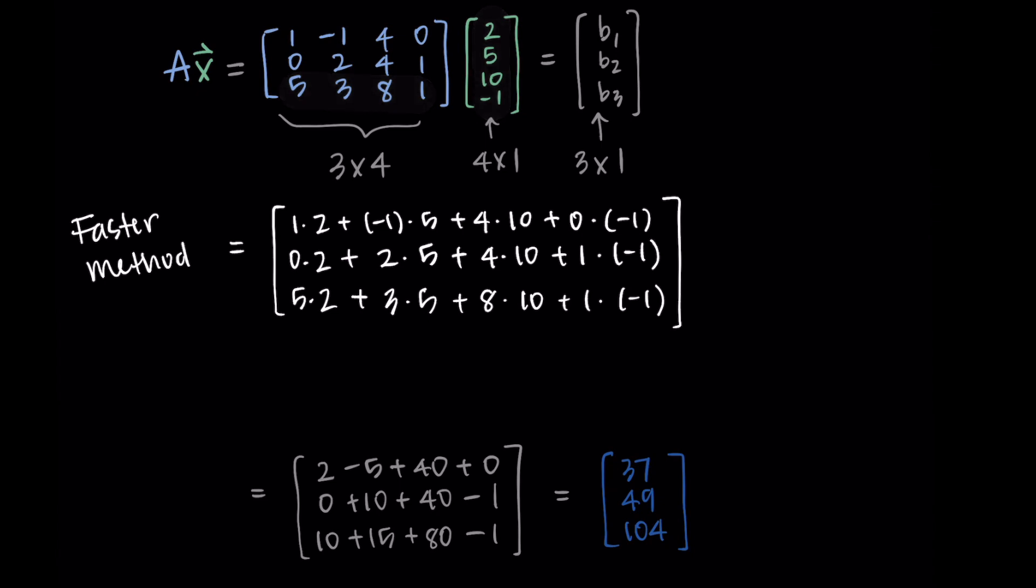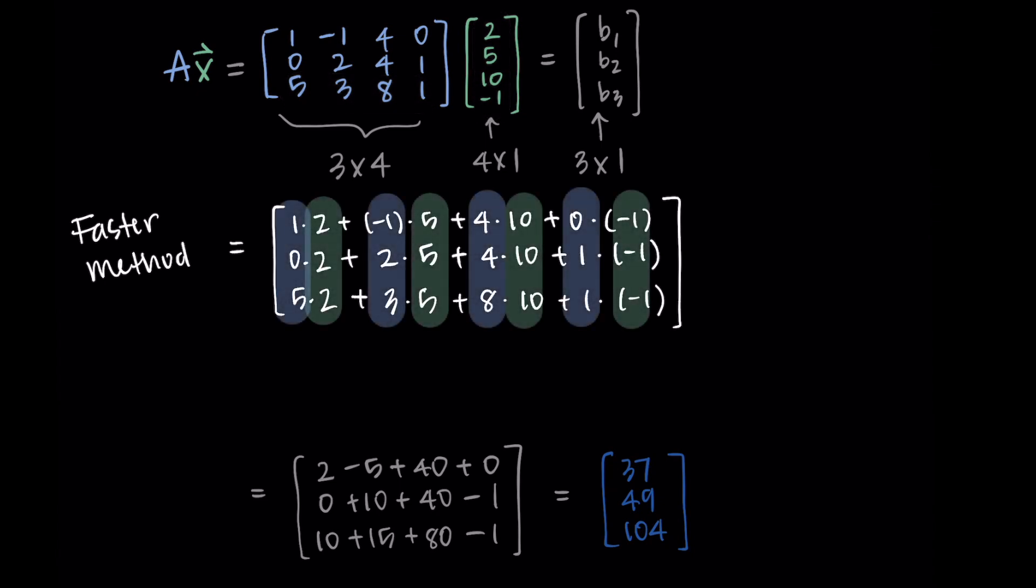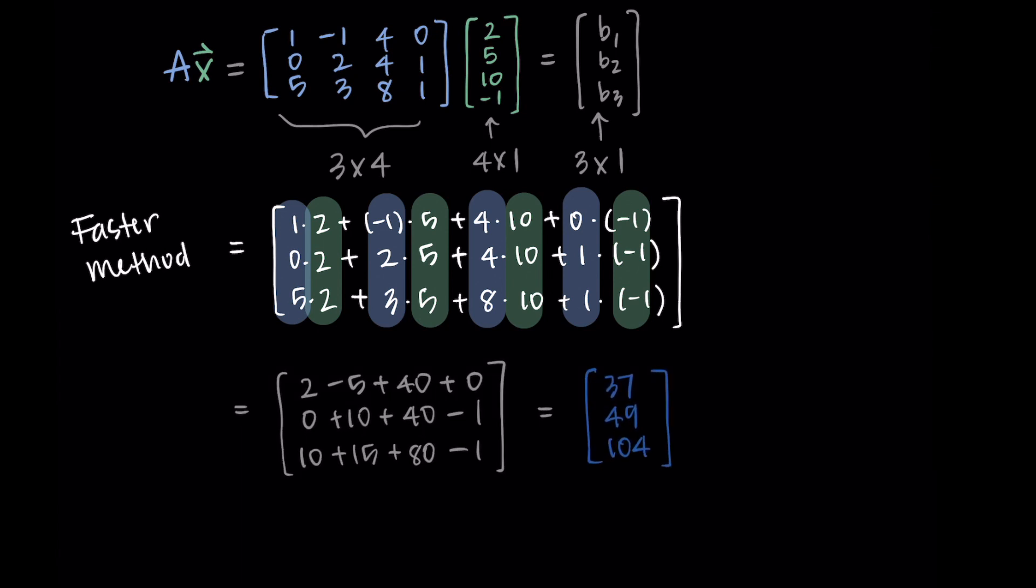At this point I like to point out that we can see the columns of A and we see that they're multiplied by the corresponding components of x. So it's nice for me when I'm doing these problems to really highlight that pattern for myself. Okay so at this point we are then just left to simplify which is the same math we did earlier and we're getting our same final answer.